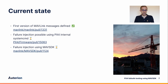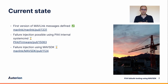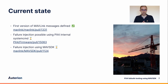The current state is that the first version of the MAVLink messages have been defined and that's merged. We have failure injection working using PX4 internal system commands, which is currently in an open pull request. And we also have failure injection possible using MAVSDK — that's also an open pull request.